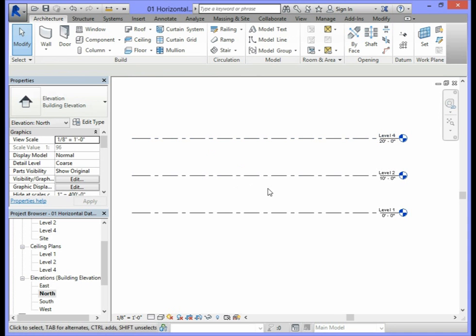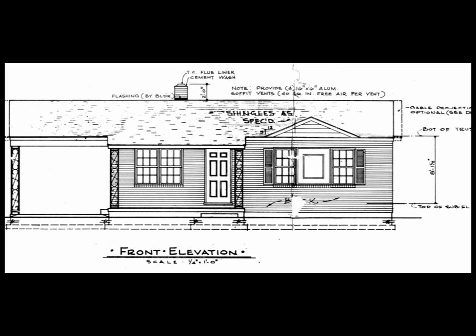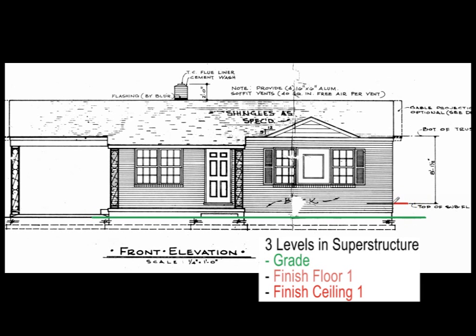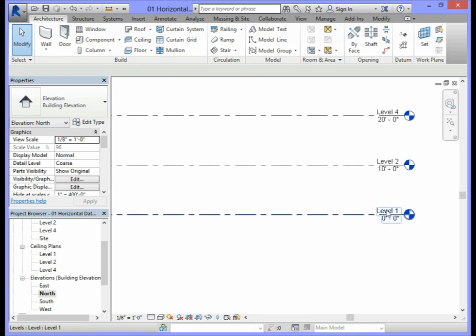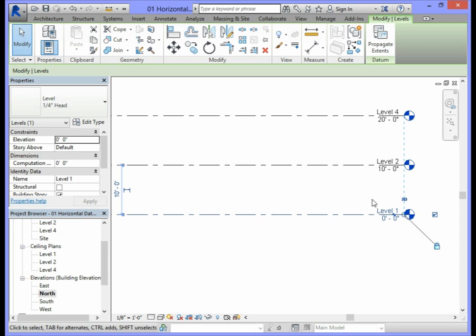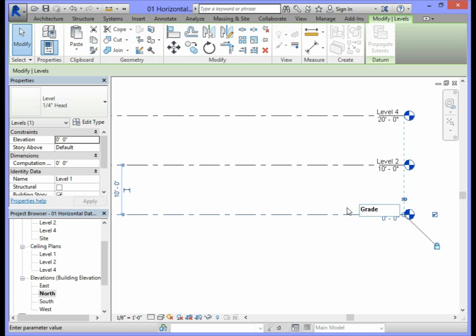Next, we want to rename these levels. Looking at the elevation, the lines represent Grade, Finish Floor 1, and Finish Ceiling respectively. For Level 1, it should be renamed to Grade. In order to rename the level, double-click on the name, highlight it, type in the name Grade, and press Enter.